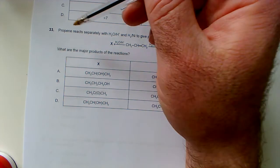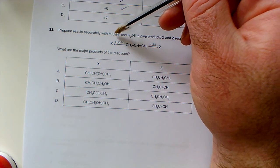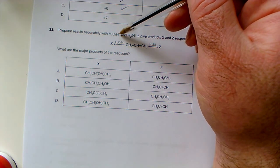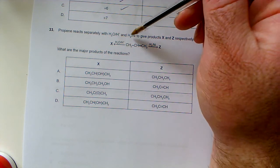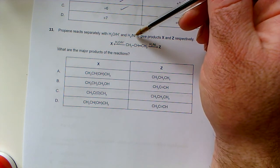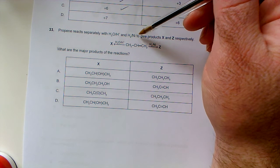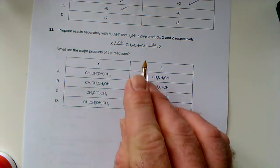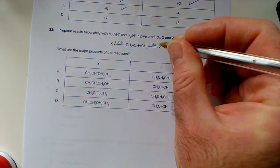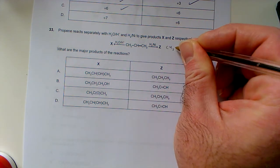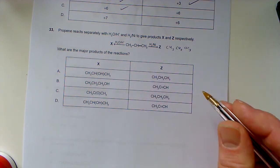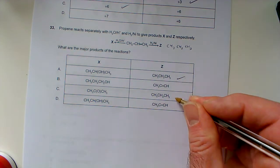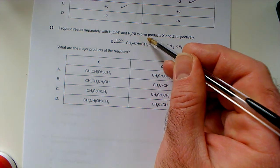On to organic chemistry. Propene reacts separately with water in the presence of acid—that's steam and phosphoric acid catalyst at 300 degrees—and hydrogen with nickel catalyst at 150 degrees. This is just going to reduce it, so we're going to get CH3-CH2-CH3, reducing it to the alkane.